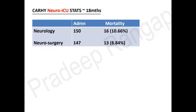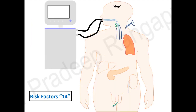Looking at our hospital statistics from Columbia-Asia referral hospital: we had around 150 neurology admissions and 147 neurosurgery admissions. The overall crude mortality was 10.6% in neurology and 8.84% in neurosurgery. I'll be sharing our unit data to corroborate the gravity of this problem and how we need to address it.